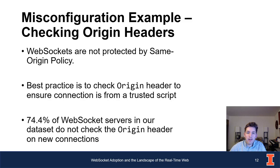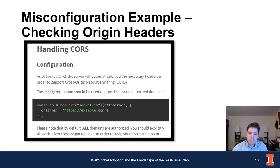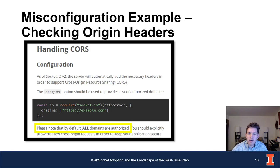One possible reason is library defaults. This is documentation from socket.io, a popular WebSocket library. When describing how to handle CORS, it notes that all domains are authorized by default — meaning origin header checking is fully open by default. This was actually updated in November 2020 after we had already submitted our work. But it shows that documentation is important, and updating libraries to facilitate secure-by-default WebSocket usage will improve the lack of origin header checking and similar configuration issues going forward.